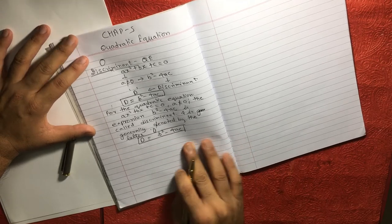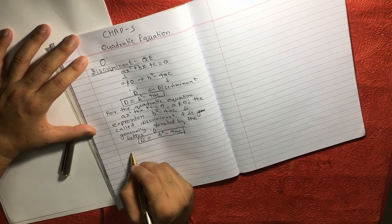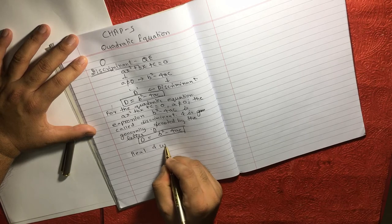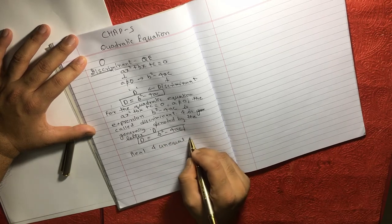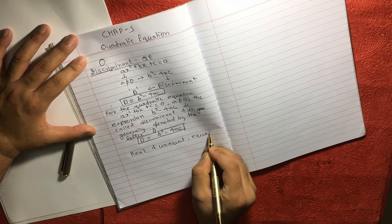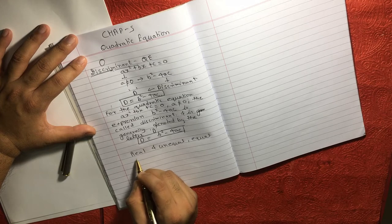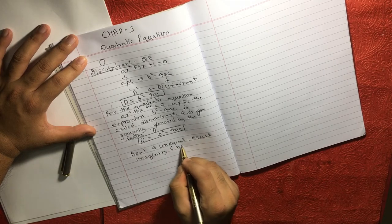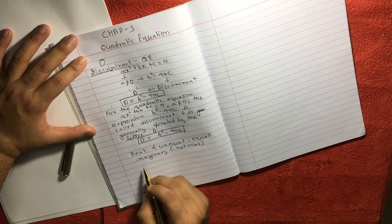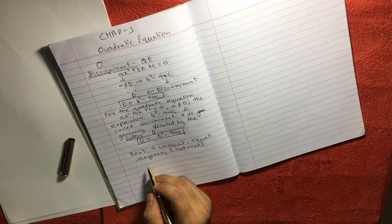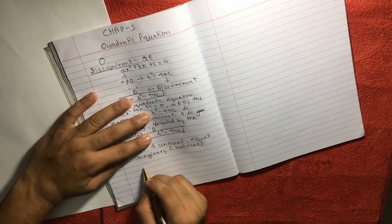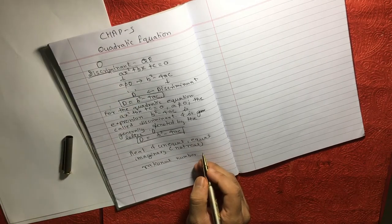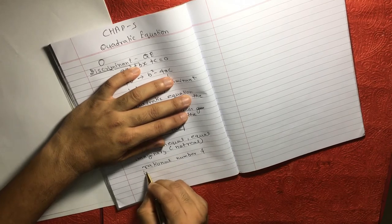Now there is another term which is going to be used and that is you need to understand what is real and unequal. There is also called equal and there is an equation which we also called as imaginary or we can also say not real. So there are few terms that we need to understand also.